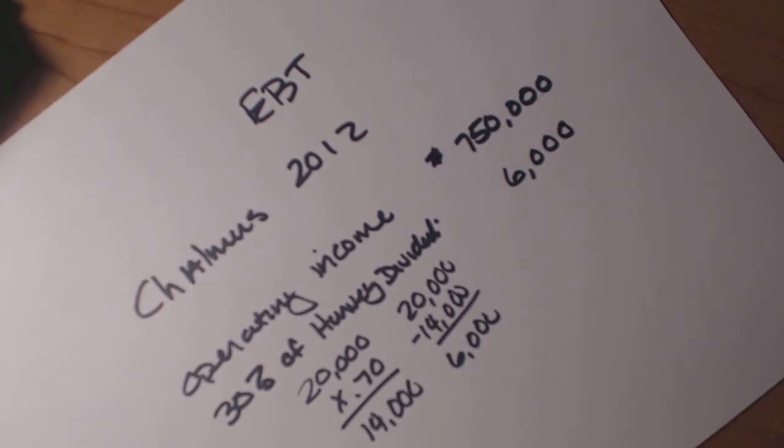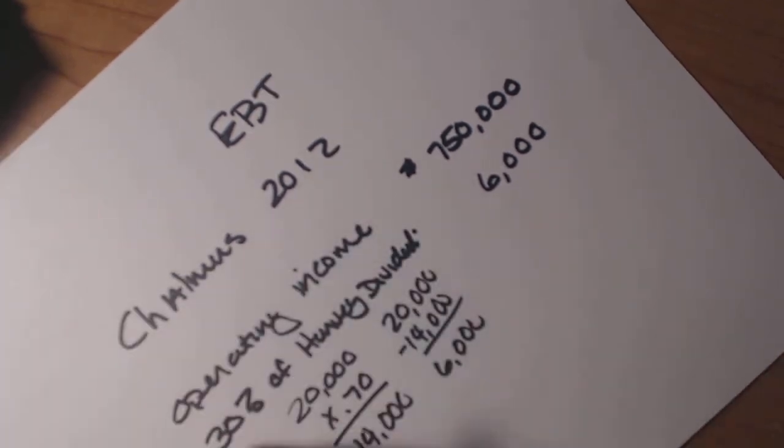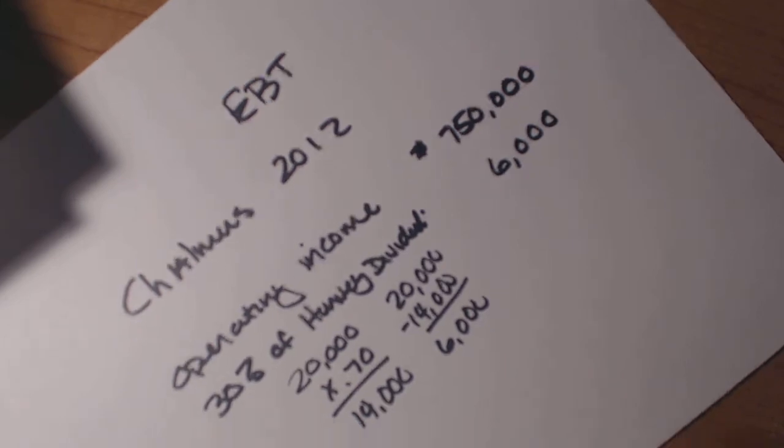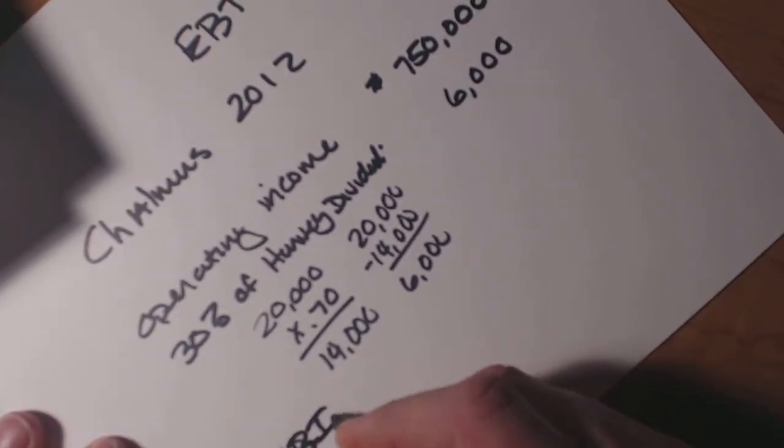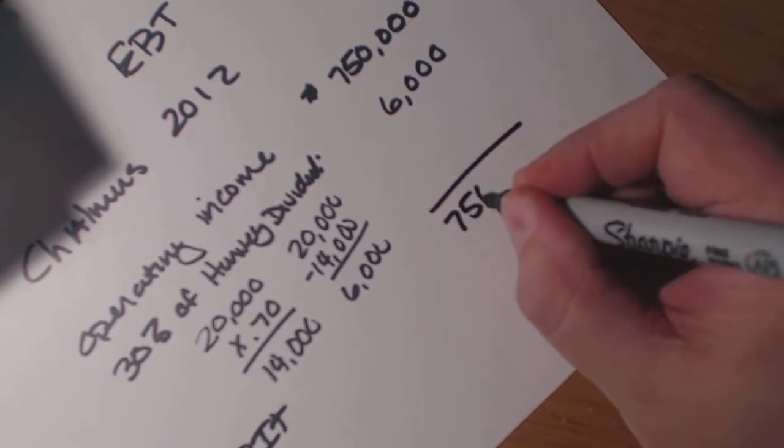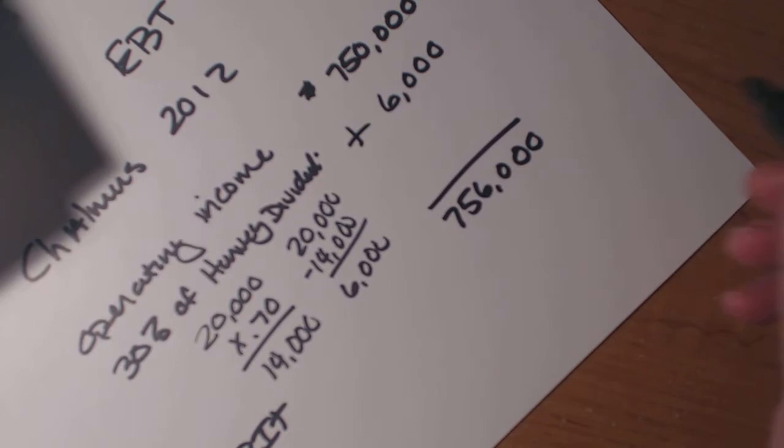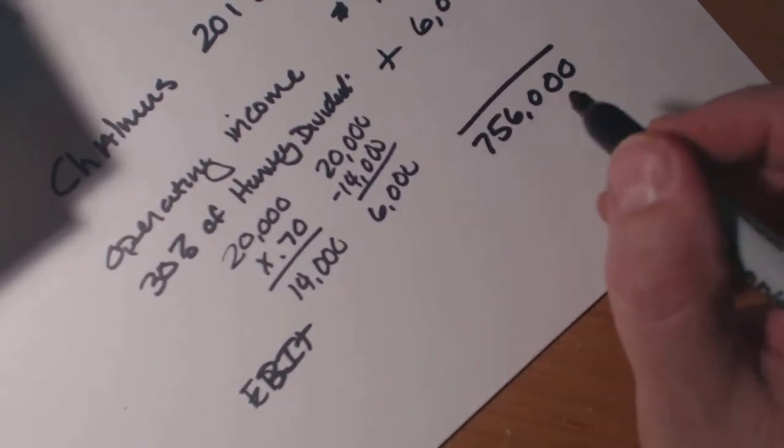So then from there, the next piece that we're going to go into is we're going to have the EBIT number, the earnings before interest and taxes. Earnings before interest and taxes is going to be $756,000. We're just going to add these. All we're doing is adding these two numbers together.